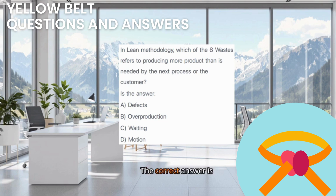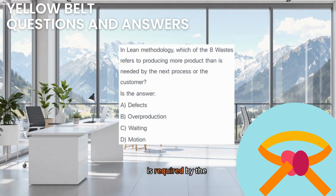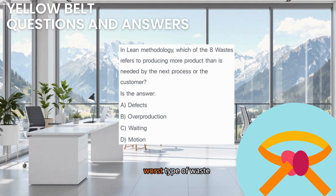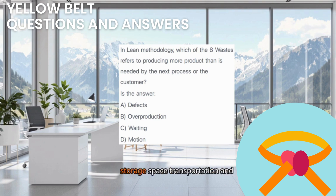The correct answer is B. Overproduction. Overproduction is making more, earlier, or faster than is required by the next step in the process or by customer demand. It's often considered the worst type of waste because it tends to cause other wastes, like excess inventory which needs storage space, transportation, and risks becoming obsolete.